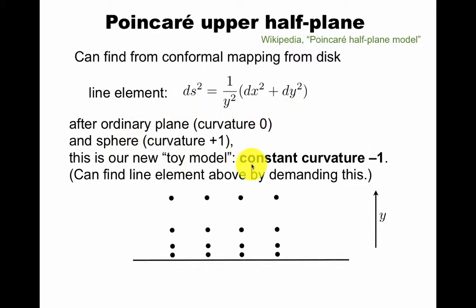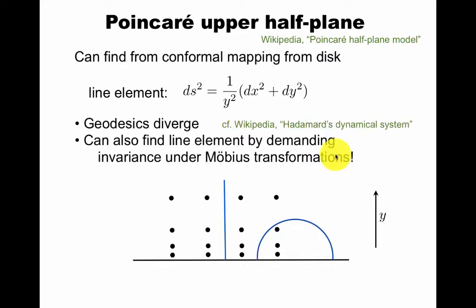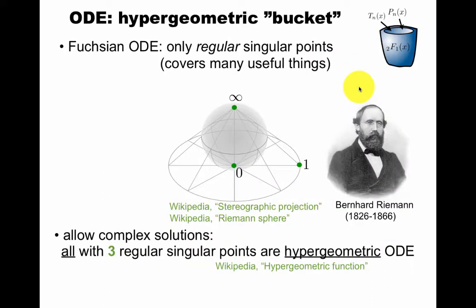So after the ordinary plane and the sphere, this is a useful toy model. It turns out it has negative curvature. So if you know how to compute curvature, you can compute it from this line element using standard methods from general relativity or differential geometry. In fact, this line element can be found by demanding constant curvature minus one or by demanding invariance under Möbius transformations. You can find geodesics that are analogs of straight lines. You find a straight line up or a straight semicircle is actually about as straight as you get in the upper half plane. And this is important to Poincaré when you consider this as a model for non-Euclidean geometry and study Euclid's parallel axiom.